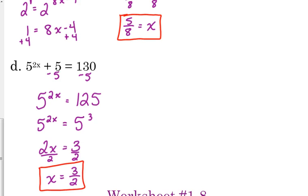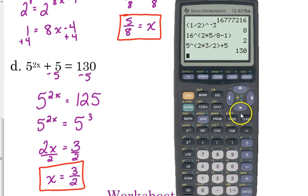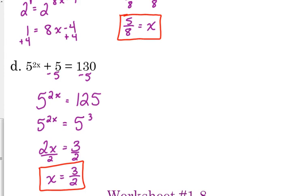And again, check it. Go back to the original problem. 5 to the, put it in parentheses, 2 times 3 halves plus 5 equals 130.